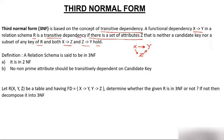If X→Z and Z→Y hold, then X→Y will also hold — similar to: if A equals B and B equals C, then A equals C. So a dependency X→Y is said to be a transitive dependency if there exists an attribute or set of attributes Z such that X→Z and Z→Y exist, which implies X→Y is transitive.